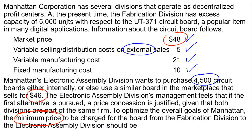There are a couple of pieces of information critical to this. First, the fabrication division has excess capacity of 5,000 units, and this other division wants to purchase only 4,500 units. That means the fabrication division has the capacity to do this without canceling any other orders — we won't have to turn away any existing customers. Because we have capacity, all we need to cover are the variable costs of production.